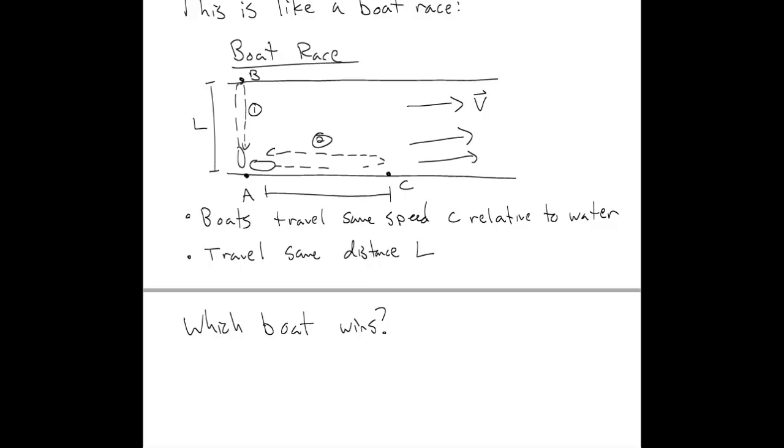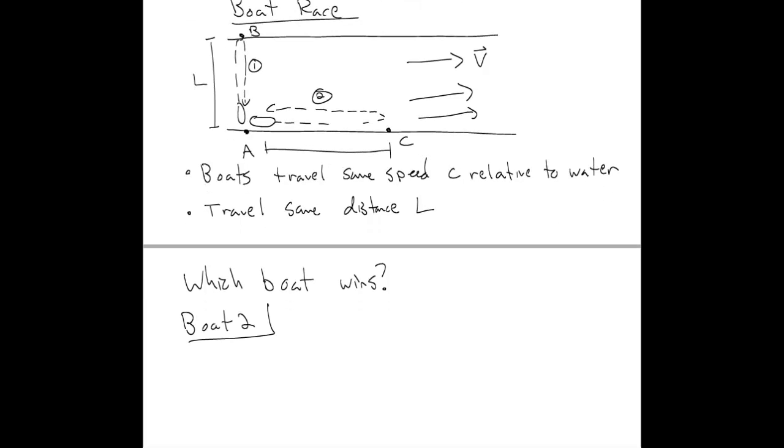So let's actually start with boat 2 first. And so boat 2 first goes from point A to point C, and the relative speed it has going from A to C is given by C plus V. It gets an extra boost as it's going downstream. However, when it's going upstream, it has to fight against the river, and so it's going at a smaller relative speed of C minus V.